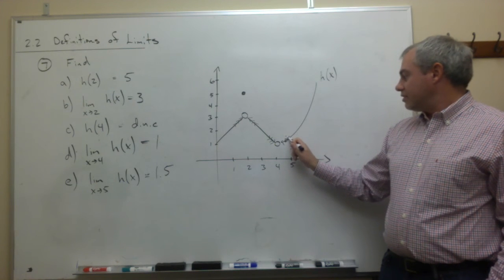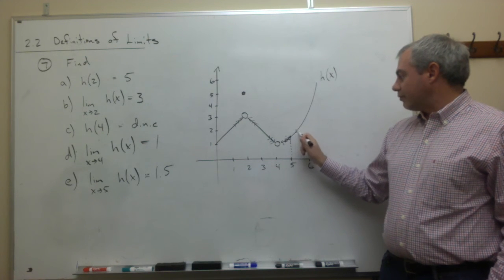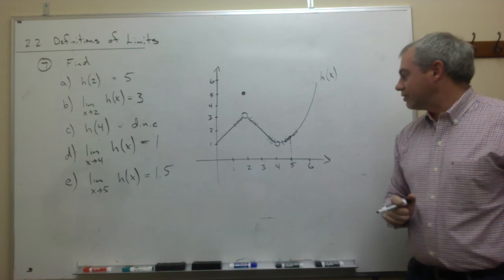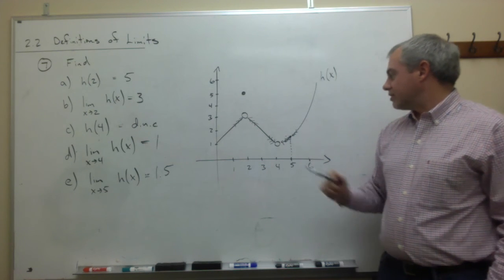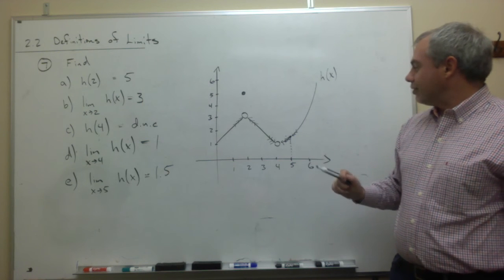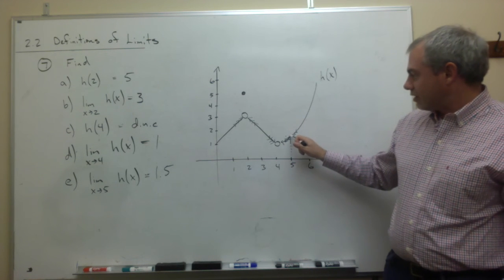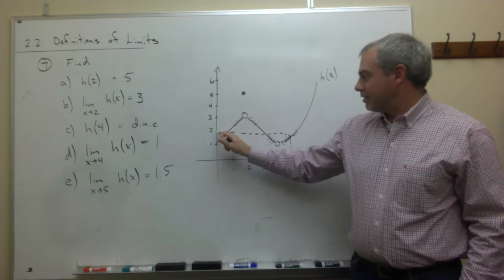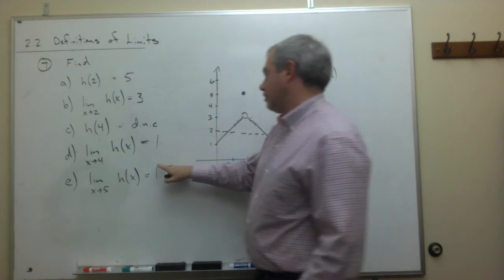So as we come from the left side, it's getting close to a point. As we come from the right side, it's getting close to a point. And I'd say that that point is maybe 1.5, maybe in your books that's more like 2. It's hard to tell from my graph, so maybe it's 1.5, maybe 2. Let's just put in 2.